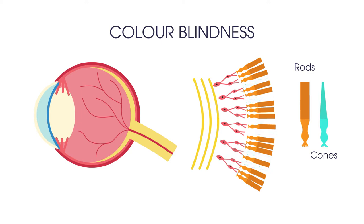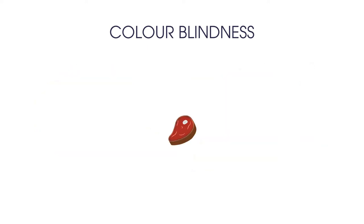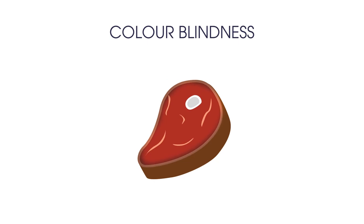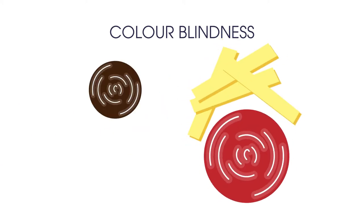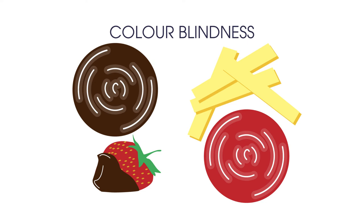Colour blindness can cause people difficulty in everyday life. Most red-green colour blind people won't know if they've cooked a piece of meat rare or well done, and they're unlikely to be able to tell the difference between green and ripe tomatoes, or between ketchup and chocolate sauce.